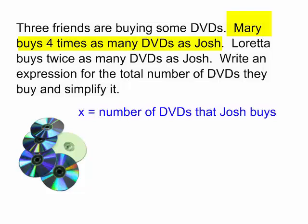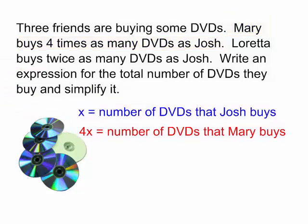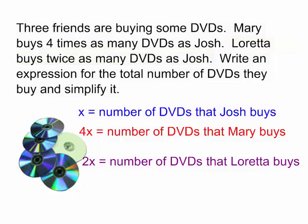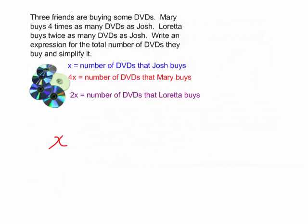Mary buys 4 times as many as Josh, so 4 times x will be the number of DVDs that Mary buys. Loretta buys twice as many DVDs as Josh, so that will be 2x. Let's write an expression for the total number of DVDs they all buy. x is the number of DVDs that Josh buys, or we could say 1 times x, plus Mary buys 4x DVDs, and the number of DVDs that Loretta buys is 2x. That is an expression for the total number of DVDs they all bought.